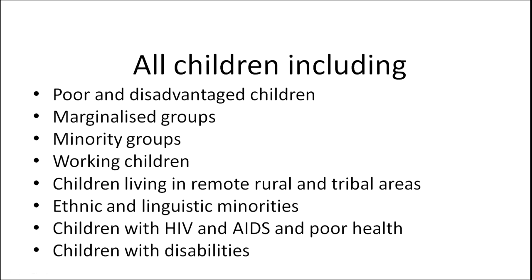To do that, we need to ensure that all children are included in classroom and school activities — these might be poor children or children belonging to the disadvantaged or marginalized groups. They might be students from minority groups or working children. We also have to provide equal opportunities for children living in remote, rural and tribal areas. It is also important that children from ethnic and linguistic minorities are included in school and classroom activities equally. Children with health problems or certain disabilities also need to be included in class activities accordingly.